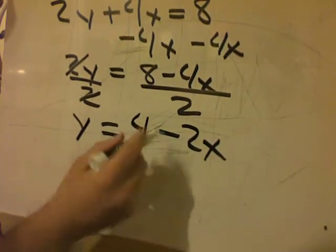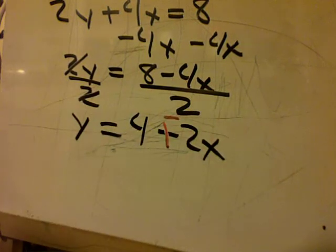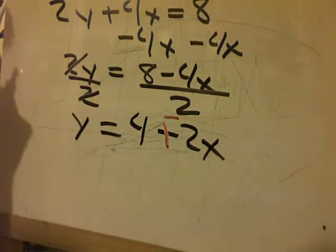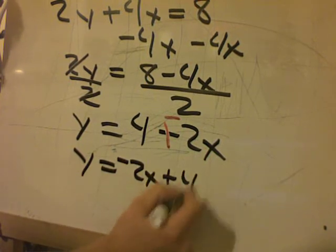So I want to go ahead and rewrite that now. I'm going to do my little sign change so I can use the commutative law of addition. So it's going to be y equals negative 2x plus 4.